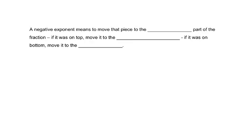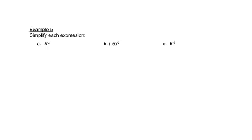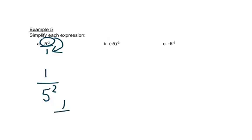A negative exponent means to move that piece to the opposite part of the fraction. If it was on top, we'll move it to the bottom; if it was on the bottom, we'll move it to the top. In part a, we really have 5 to the negative 2 over 1. That negative exponent tells us to move it to the bottom, and when we do, it changes the sign of the exponent — it becomes 5 to the 2nd power. We put a 1 on top to hold that spot, and 5 to the 2nd power means 5 times 5, which is 25. So our answer is 1 over 25.